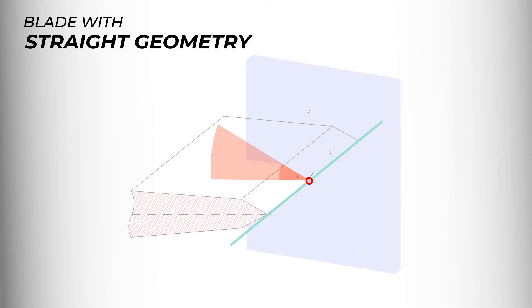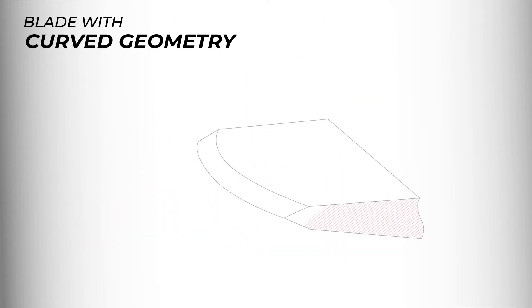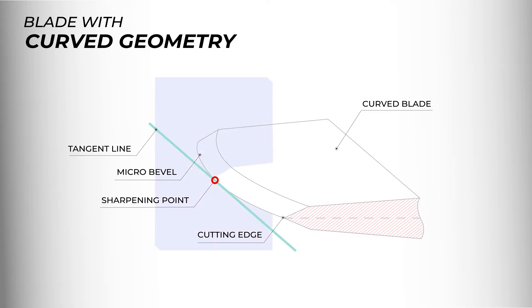Now, let's consider a blade with more complex geometry. Draw a tangent to a point on the blade and construct an orthogonal plane. Other points on the blade will have their own tangent and plane and respectively their sharpening angles will be different.